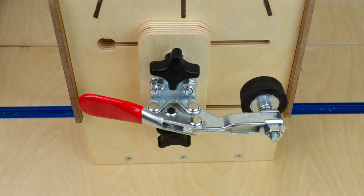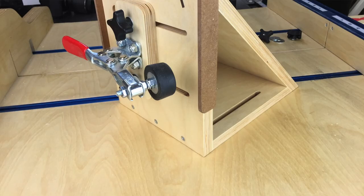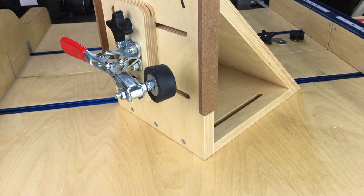If you guys are interested in improving your toggle clamp I'm going to have a link to the rubber feet in the build article, and that link you can find down in the description below. Or just go to nickferry.com and search toggle clamp.